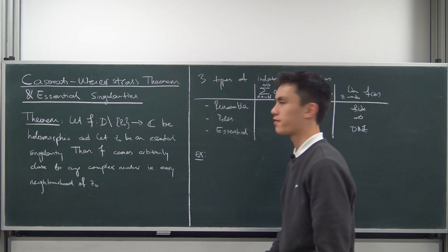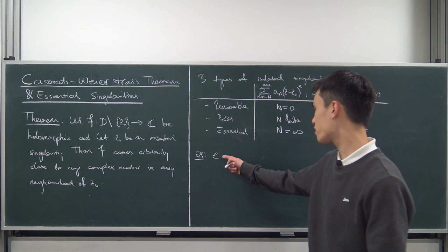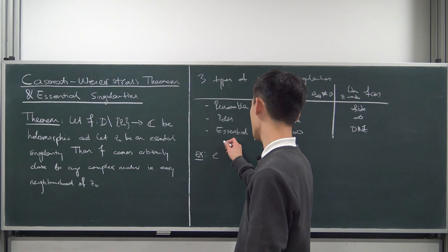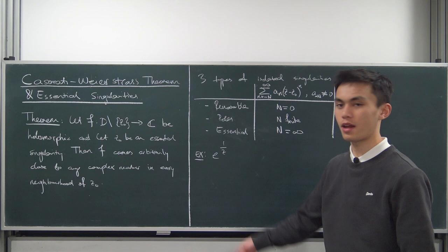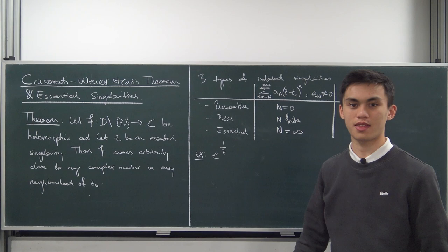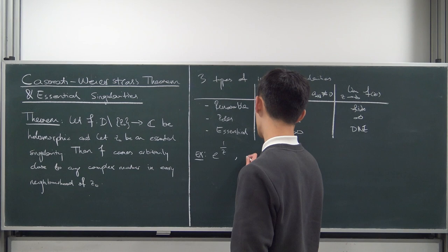Let's take a look at an example of an essential singularity. It's very easy to construct one — you can just take e raised to some function that has a pole. The most straightforward example is e to the one over z. We can check it has infinitely many negative powers: if you Taylor expand the exponential function you get infinitely many positive powers, but putting one over z in there automatically gives you infinitely many negative powers. So this function has an essential singularity at z equals zero.